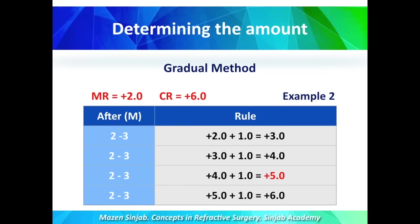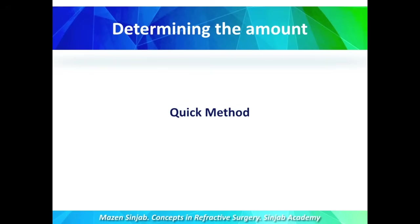For example, if when we reach plus 5 the patient has reached the highest number they can tolerate, then we have to treat plus 5. The gradual method is much more expensive and time-consuming, but it is scientific and much more accurate than the quick method. However, in daily practice, usually we go to the quick method.